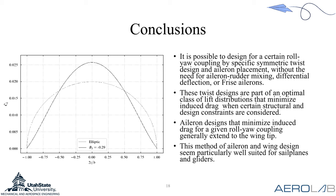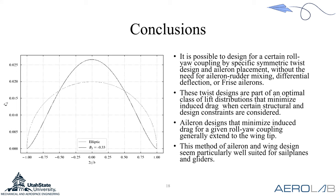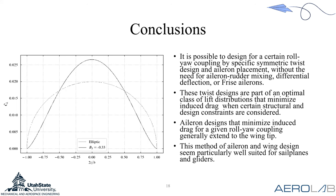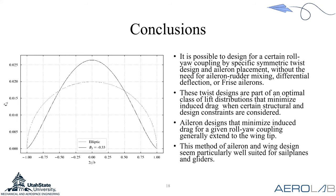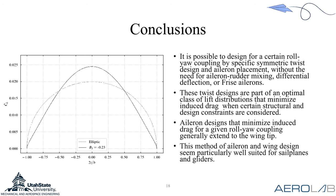In conclusion, this research demonstrates it is possible to design for a certain roll-yaw coupling when ailerons are deflected, just by using twist distribution and aileron placement. These twist distributions give an optimal class of lift distributions that minimize induced drag when accounting for structural and aerodynamic constraints. We found that we typically want the aileron tip to extend to the wing tip to minimize induced drag. This method is particularly well suited for sailplanes and gliders, which can take advantage of these optimal lift distributions to improve aerodynamic efficiency.